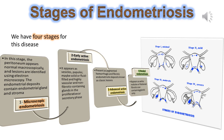Stage 2: Early active endometriosis. It appears as vesicles and papules, maybe solid or fluid-filled, and highly vascular and non-fibrotic, containing glands in the proliferative or secretory phase.